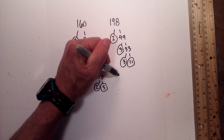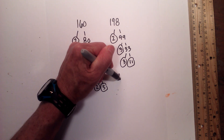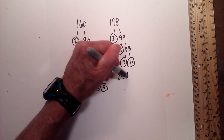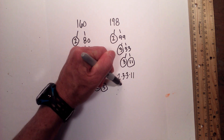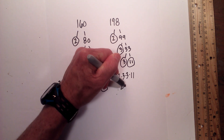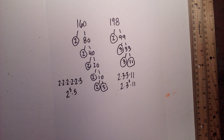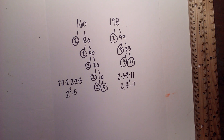The prime factorization of 198 is 2 times 3 times 3 times 11, or 2 times 3 squared times 11. So there we go — the prime factorization of 160 and 198. Thanks for watching. Moo Moo Math uploads a new math and science video every day — please subscribe and share.